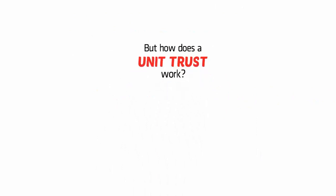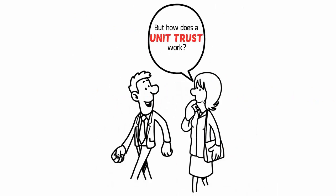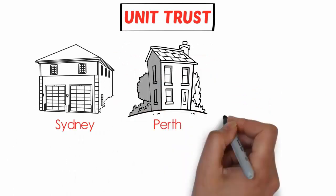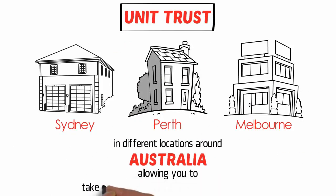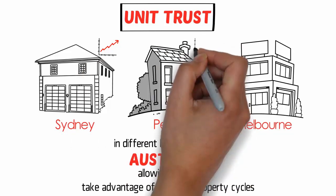But how does a unit trust work, asks Belinda? Richard says, a unit trust is a company that owns multiple properties in different locations around Australia, allowing you to take advantage of different property cycles. When Sydney is booming, Perth may be on a down cycle, and Melbourne may be starting an up cycle.